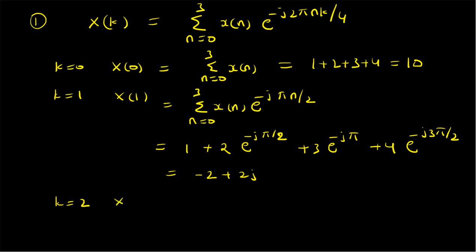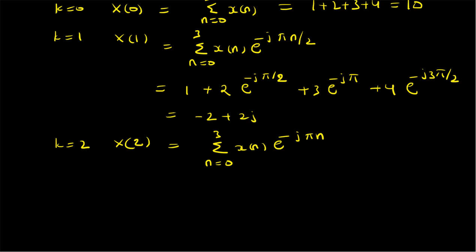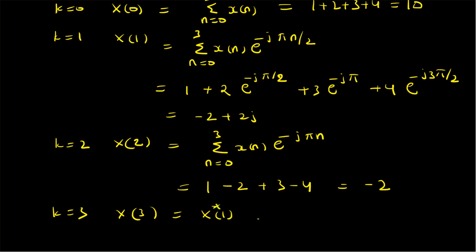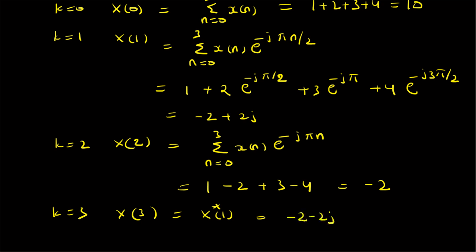For k=2, X[2] is the summation with e^(−jπn), which is (−1)^n. So it equals 1−2+3−4 = −2. For k=3, since x[n] is a real sequence, X[3] = X[1]* = −2−2j. Therefore, the DFT sequence X[k] = {10, −2+2j, −2, −2−2j}.